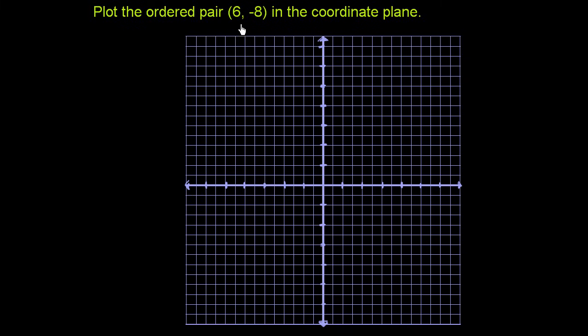Plot the ordered pair (6, -8) in the coordinate plane. So this is the coordinate plane right over here. The horizontal axis here, this is the x-axis. The vertical axis here is the y-axis.